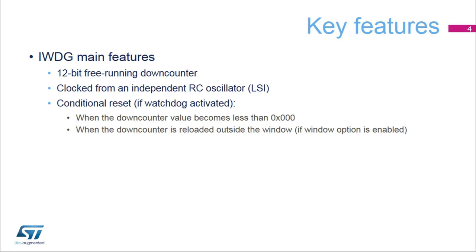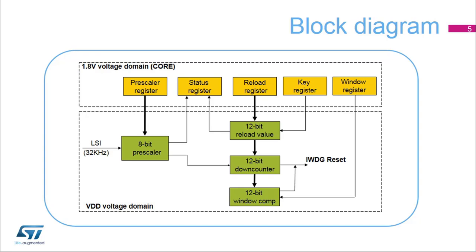The IWDG features a 12-bit free-running down counter, clocked by an independent Low-Speed Internal RC Oscillator at 32 kHz. When the IWDG is activated, a reset is generated if the down counter reaches zero, or when the down counter is reloaded outside the window if that option is enabled. The IWDG registers are located in the core voltage domain, while its functions are in the VDD voltage domain, making it possible for the IWDG to continue operating in stop and standby modes.